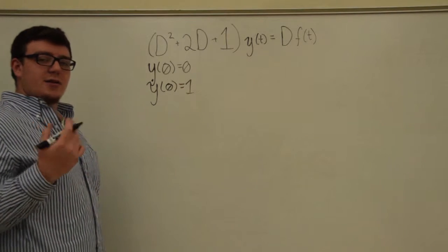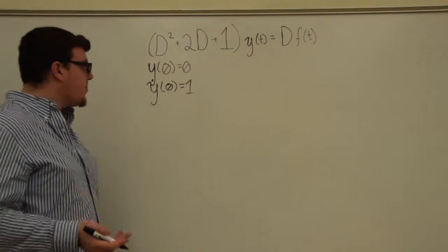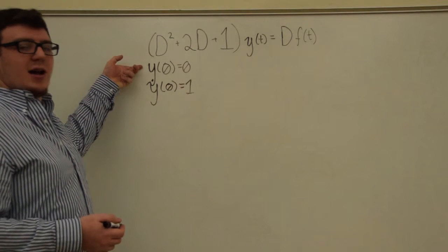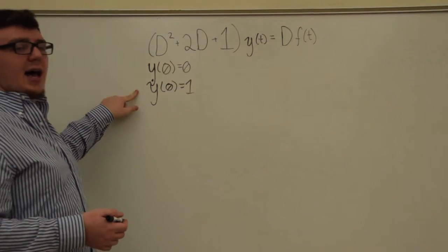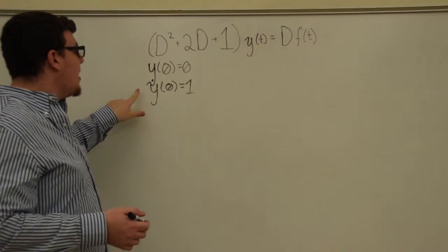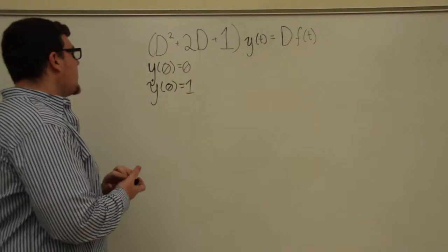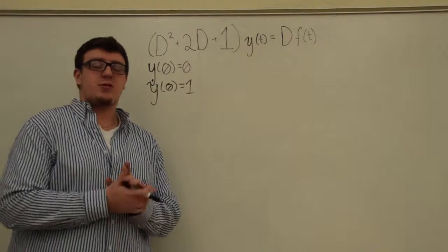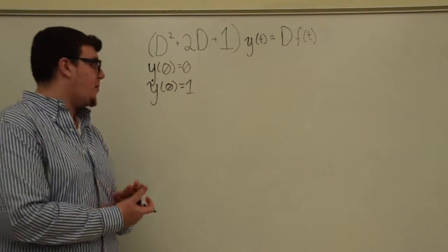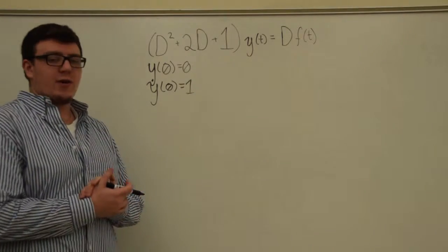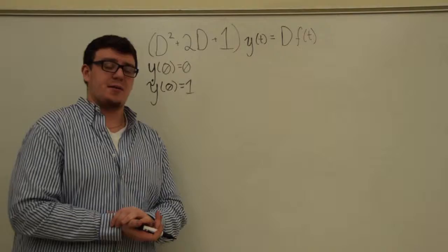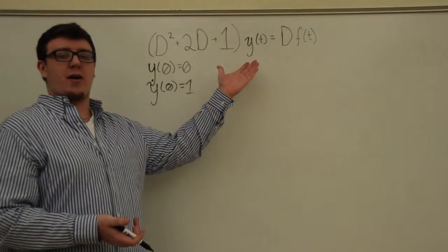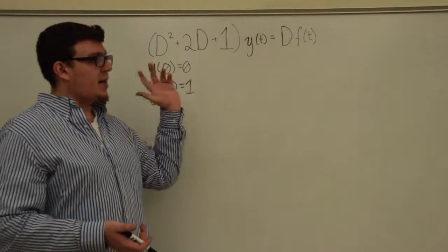Your solution to this differential equation will have initial conditions that y of 0 equals 0 and y-dot, which is your derivative of y, equals 1. So in order to get the impulse response, which is what we're looking for in this problem, we first need the natural response of the system. The natural response is defined when the left side of the equation with our output equals 0.